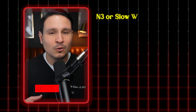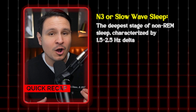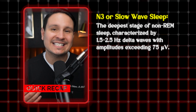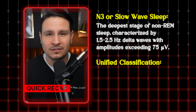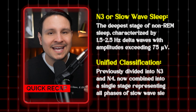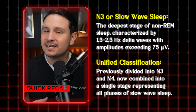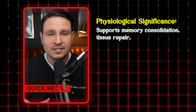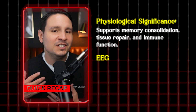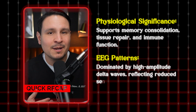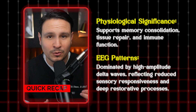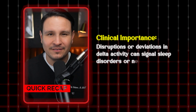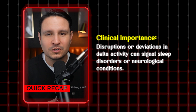Alright, let's recap. N3 or slow-wave sleep is the deepest stage of non-REM sleep, characterized by 1.5 to 2.5 Hz delta waves with amplitudes exceeding 75 microvolts. Unified classification: previously divided into N3 and N4, now combined into a single stage representing all phases of slow-wave sleep. Physical significance: N3 sleep supports memory consolidation, tissue repair, and immune function. EEG patterns: the EEG is dominated by high-amplitude delta waves reflecting reduced sensory responsiveness and deep restorative processes. Clinical importance: disruptions or deviations in delta activity can signal sleep disorders or neurological conditions.